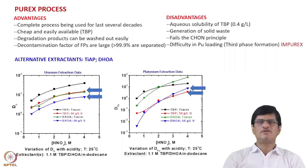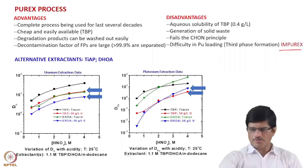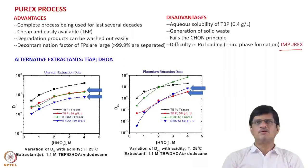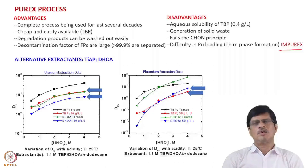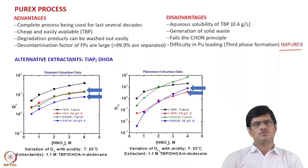To address these issues, alternatives include the IMPUREX process — improved PUREX process — where extraction of uranium and plutonium is carried out at a higher temperature, around 60°C. In that case, plutonium extraction becomes higher and uranium extraction becomes lower, allowing plutonium loading to be increased.